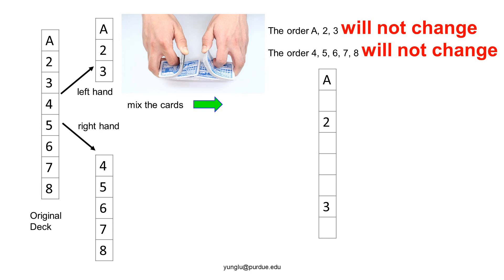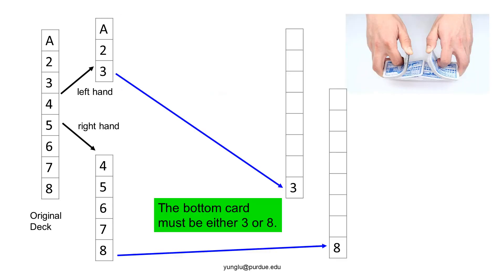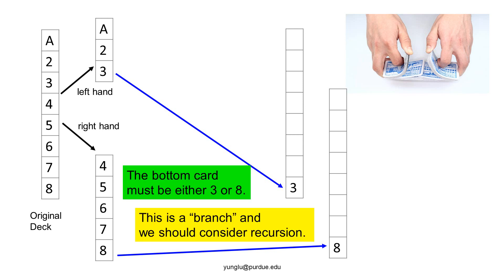After understanding this restriction, we can select the card at the bottom. The bottom card must be either 3 or 8, because 3 is the bottom card from the left and 8 is the bottom card from the right. This is an example of a branch — the program has to choose one of two possible cases. When a program has to consider branches, recursion may be a good method to solve the problem.